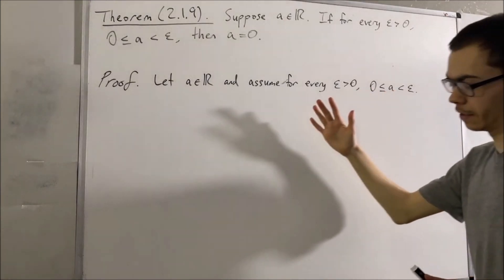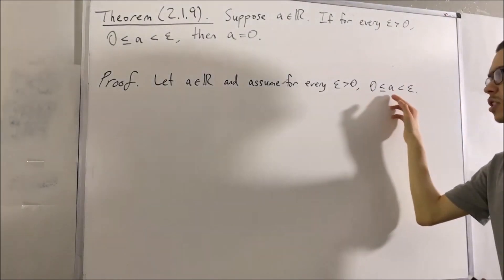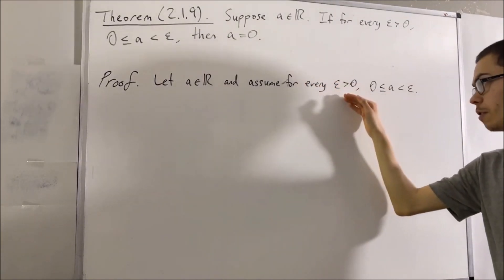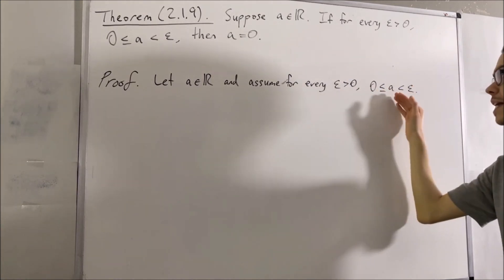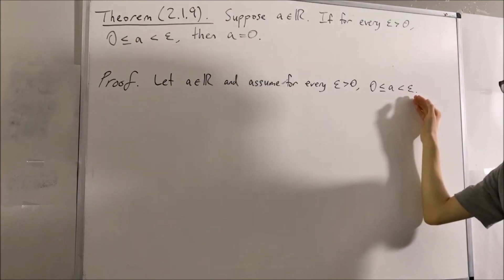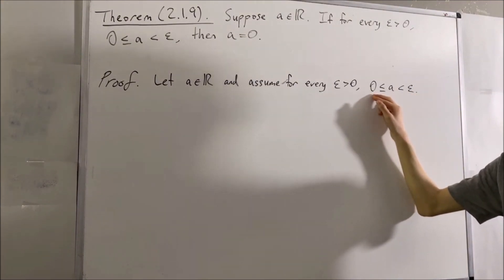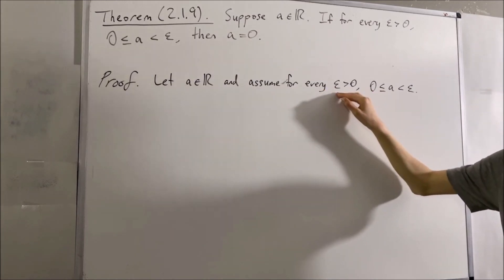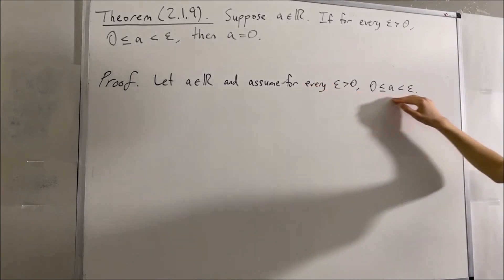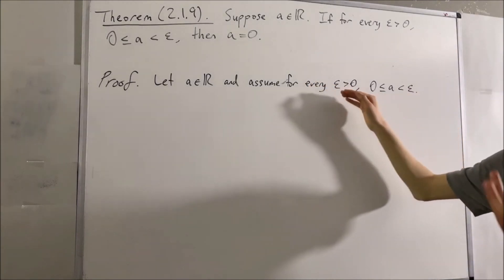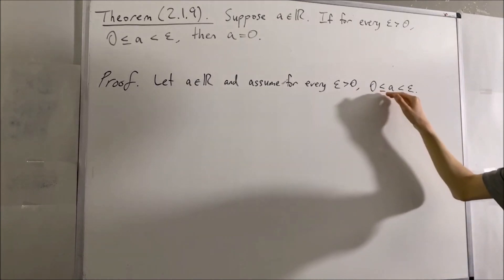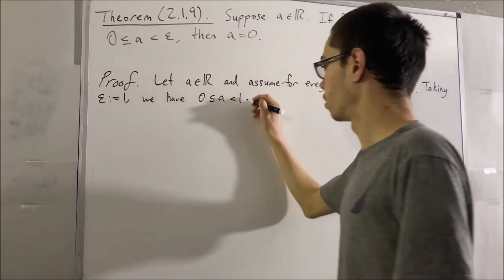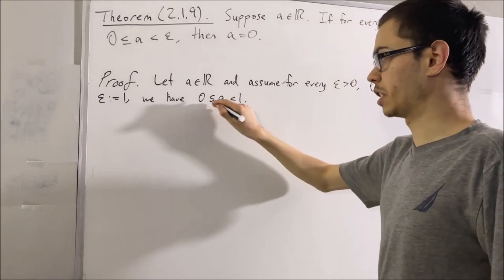Now, if you read this carefully, we aren't simply given that A is greater than or equal to 0. We're given that for every positive real number epsilon, we have that A is greater than or equal to 0 and A is less than epsilon. To show that A is greater than or equal to 0, all we have to do is take some particular positive real number, say 1. Because this statement works for every positive real number, it must work for 1, so we can conclude that 0 is less than or equal to A and A is less than 1.